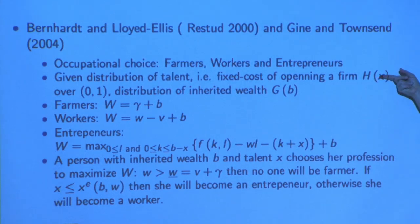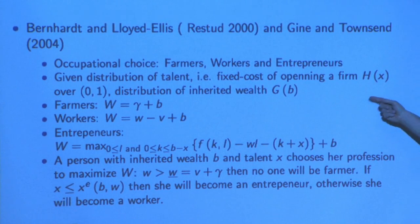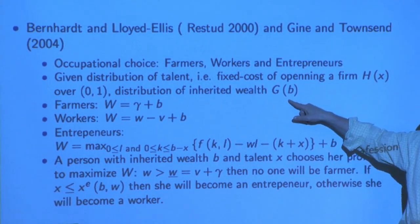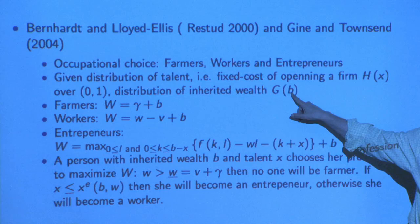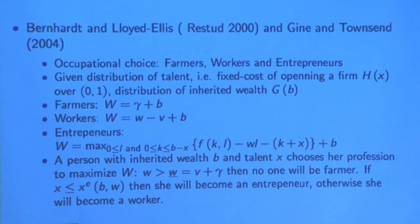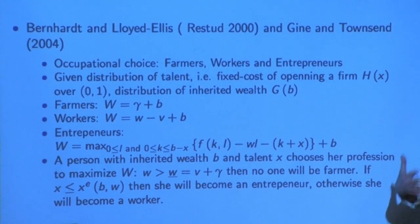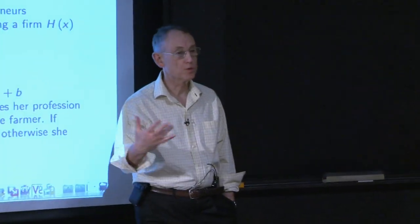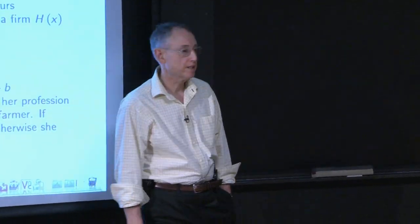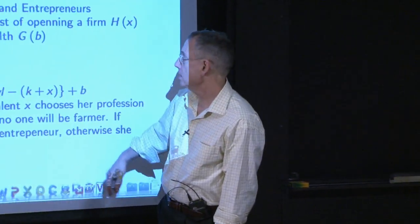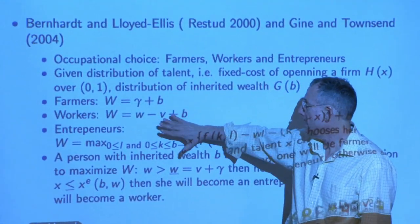You have to be careful with the notation, distinguishing densities versus cumulative distributions. There's also an initial distribution of wealth that starts off the model, G of B, where B is sort of bequest. This model has a relatively naive dynamic part — people essentially live for two periods. They eat today, and they leave money for their kids as a bequest.